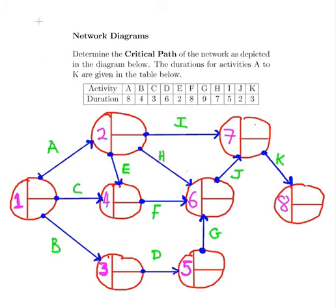In this network, we have eight nodes and eleven activities: A, B, C, D, and so on. Each of those activities has its own duration. A takes eight time units, B takes four time units, and so on.